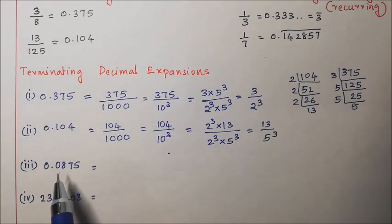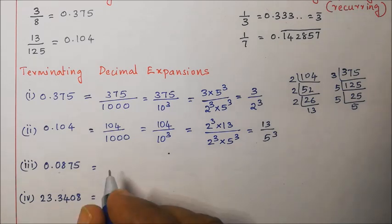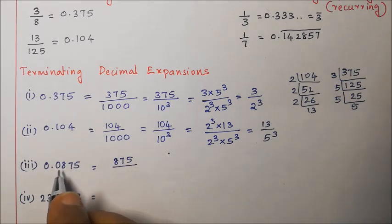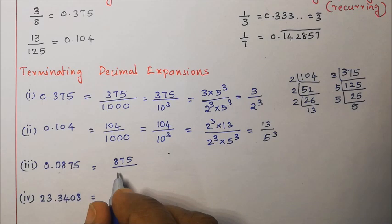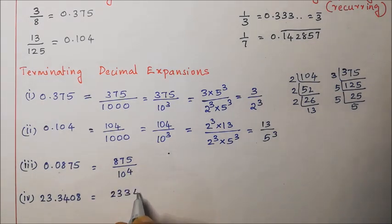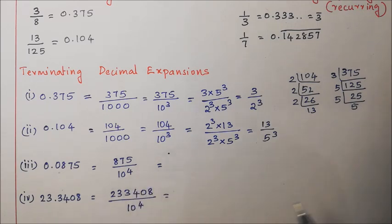Let us take two more examples: 0.0875 can be expressed as 875 divided by 10 to the power 4, and 23.3408 divided by 10 to the power 4. Now let us factorize the numerators.